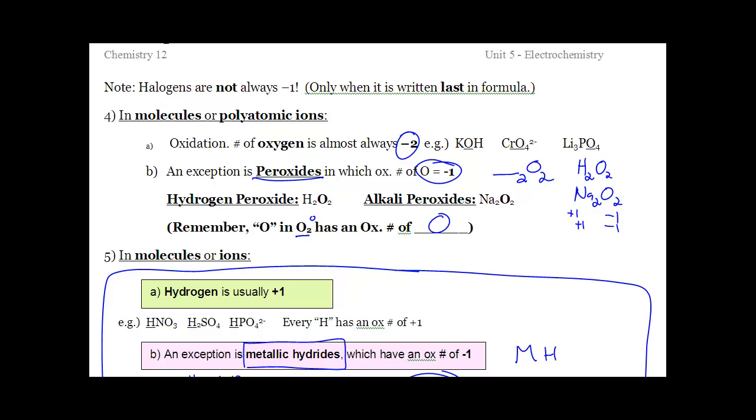And when oxygen is in diatomic O2 gas, the charge, like in the very first rule number one, is zero, which means each individual O is zero. Zero plus zero is zero. So oxygen can be minus two, 99.9% of the time. It's minus one in a peroxide, and it's zero when it's diatomic.